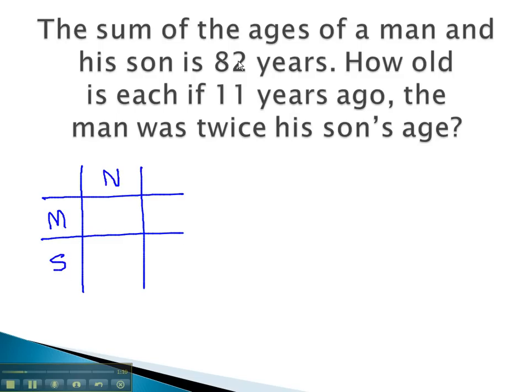Right now, we're told the sum of their ages is 82 years. We don't know how old the man is, so we make that x. The son becomes the subtraction problem, 82 minus x.